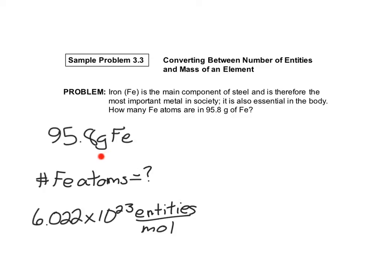So in other words, what relates grams to moles so that I can relate moles to entities using Avogadro's number? And remember I told you in a previous video that the units on the periodic table are in grams per mole. So I can use the molar mass of iron to get me from grams to moles. So I'm going to go ahead and do that now.